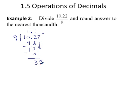Drop down another digit. And start again. 9 into 32 goes 3 times. 3 times 9 is 27. Subtract. 32 minus 27 is 5.